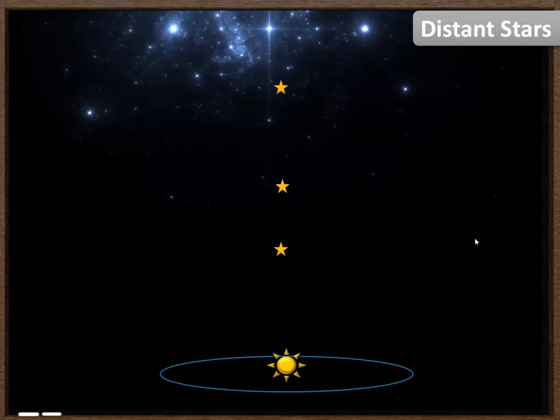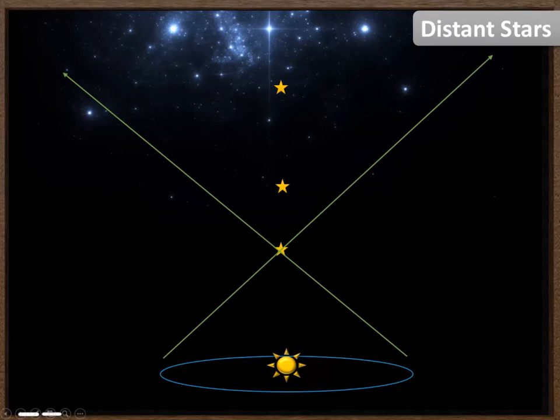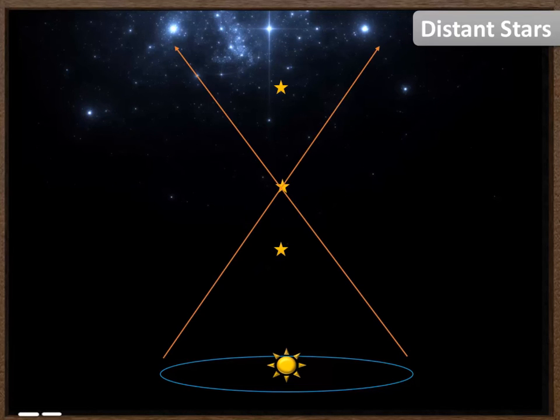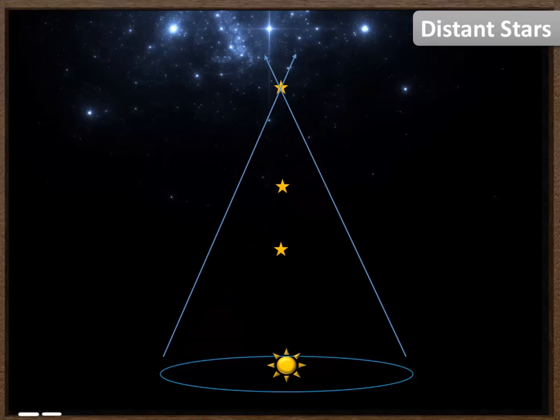So here we have three stars. One fairly close, one in the middle distance, and one quite far away. So for the first star, the closest star to us, there's going to be quite a large parallax shift during the course of the year. For the second star, that parallax shift is going to be smaller because it's further away. For the third star, the most far away, the parallax shift is tiny, very small. You can work out the size of that parallax shift and then determine the distance that star is away from you.